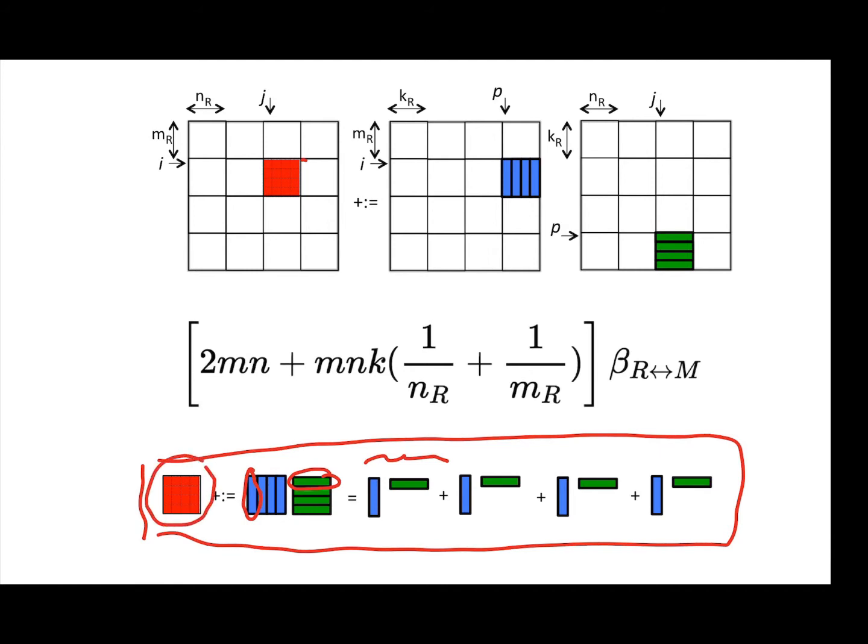But then you end up not again using that same column of A and row of B, at least not during this particular multiplication with the blocks.